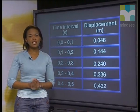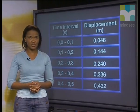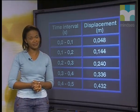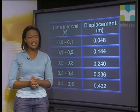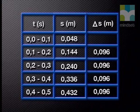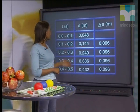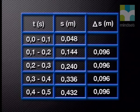So we can say that the velocity of the falling mass piece increased during its fall. In other words, the mass piece is definitely not moving at constant or uniform velocity. The displacement between consecutive 0.1-second time intervals is increasing by 0.096 metres each time — in fact, for every time interval the displacement increases by 0.096 metres.